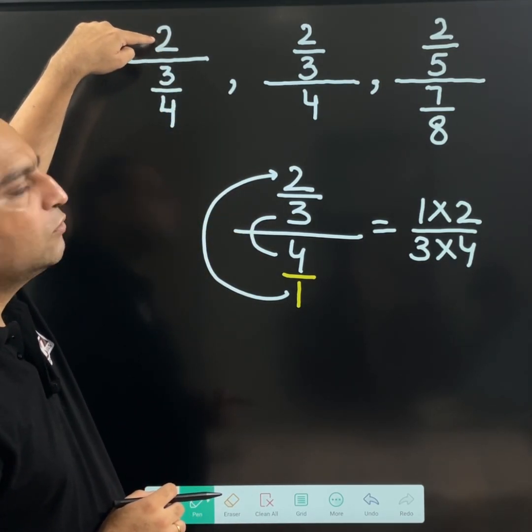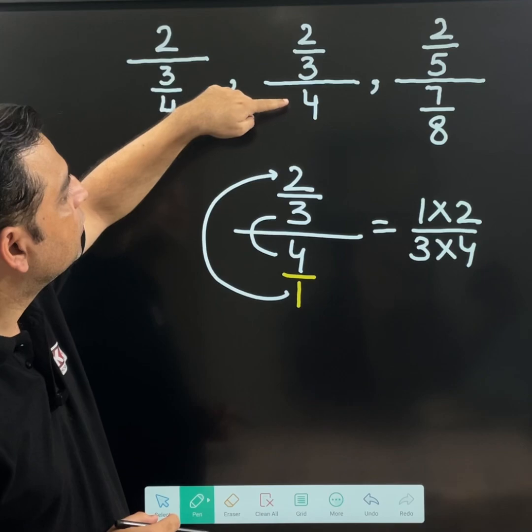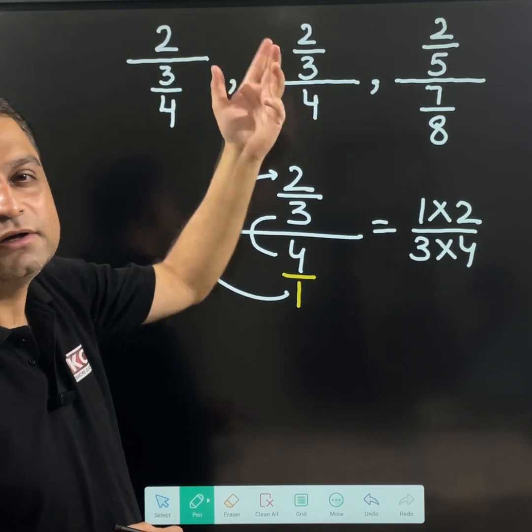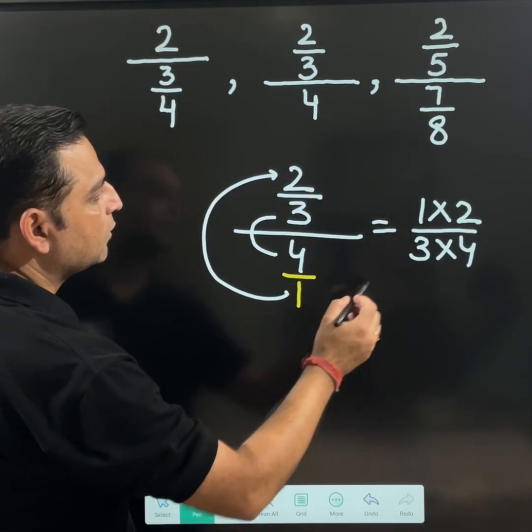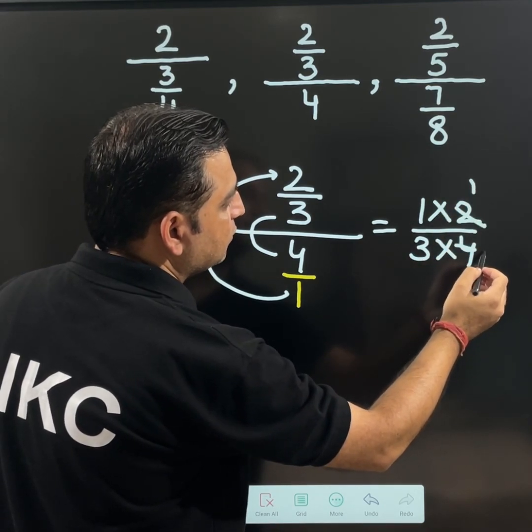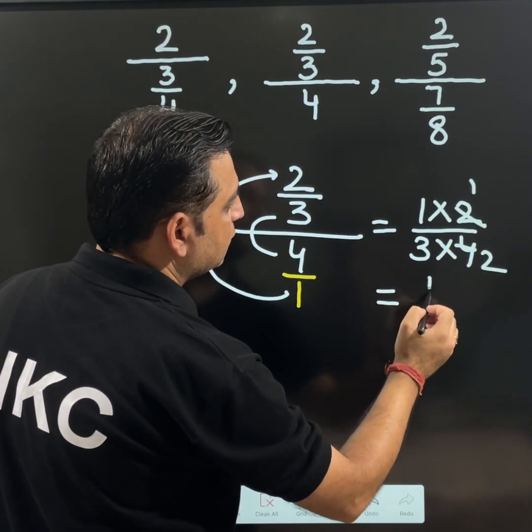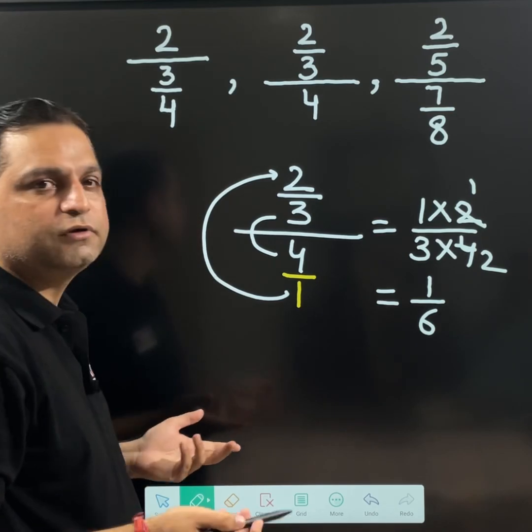Whenever I found 2 alone I wrote it 2 upon 1. If I find 4 alone in the denominator I wrote it 4 upon 1. Now this 2 and 4 can be reduced to lowest form. And your final answer will be 1 over 6.